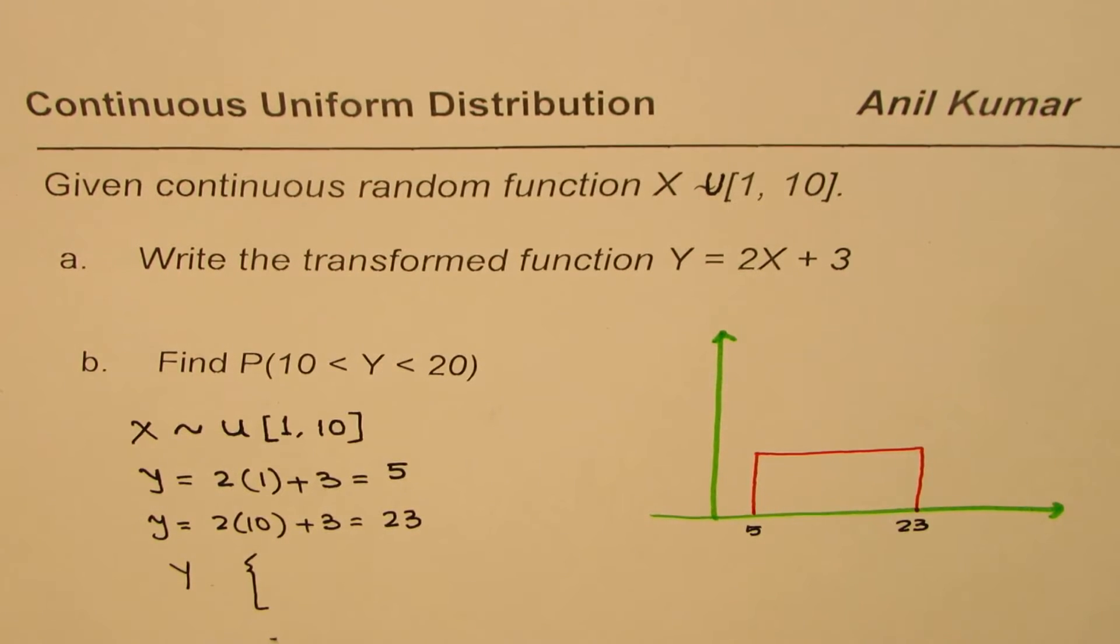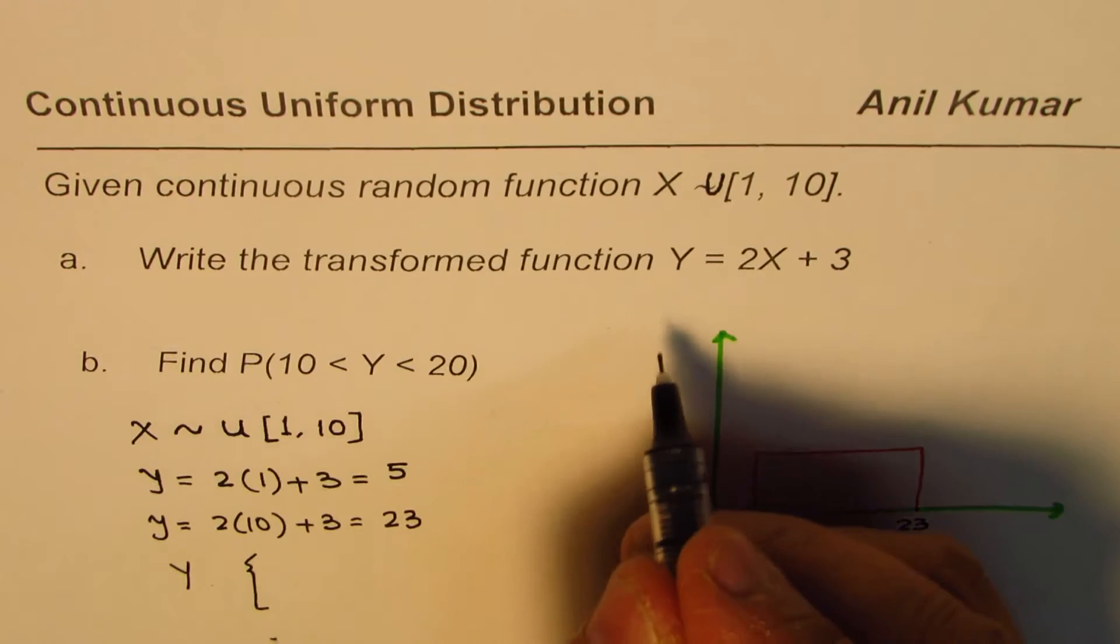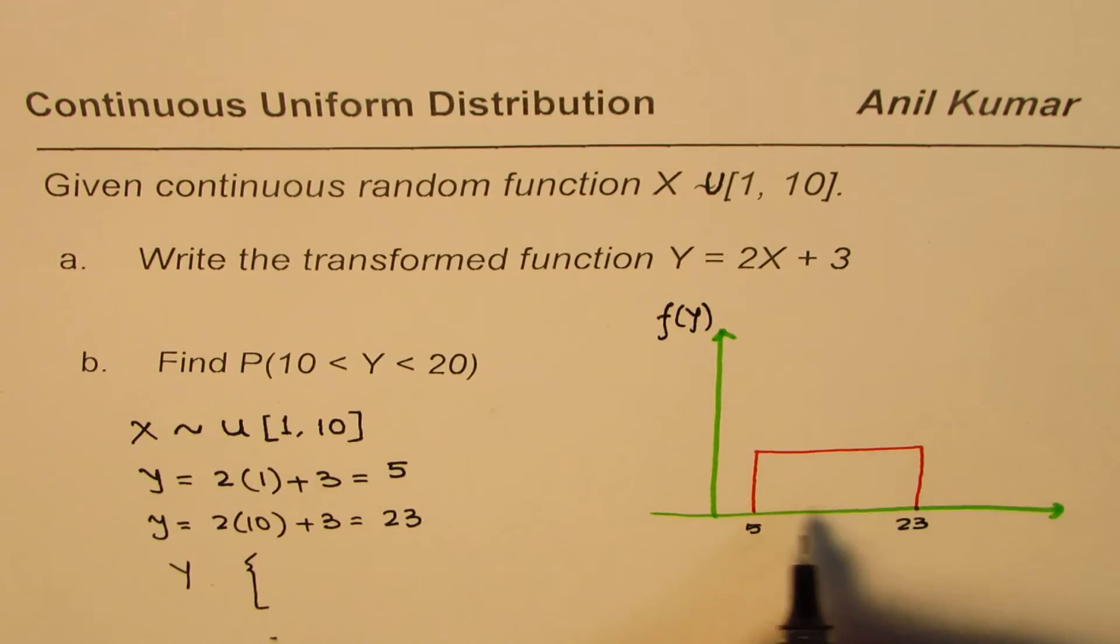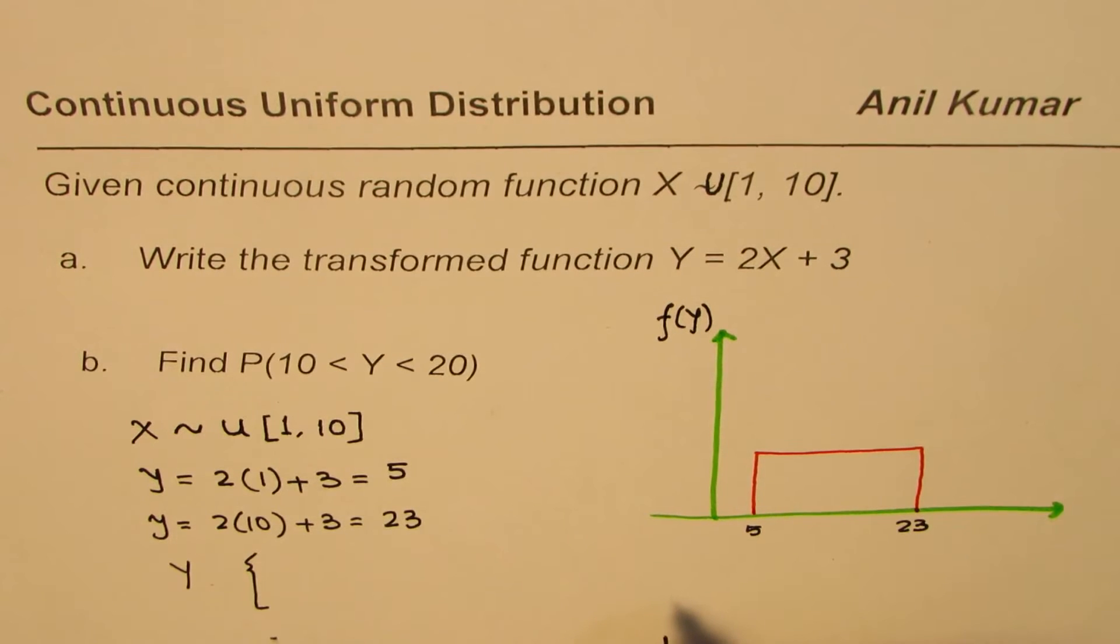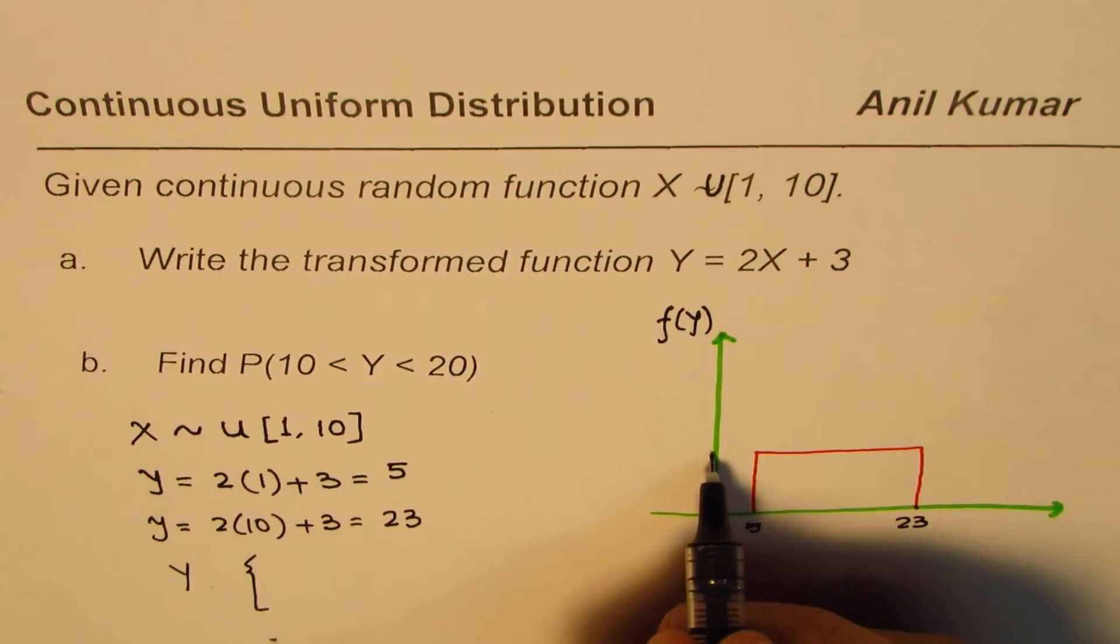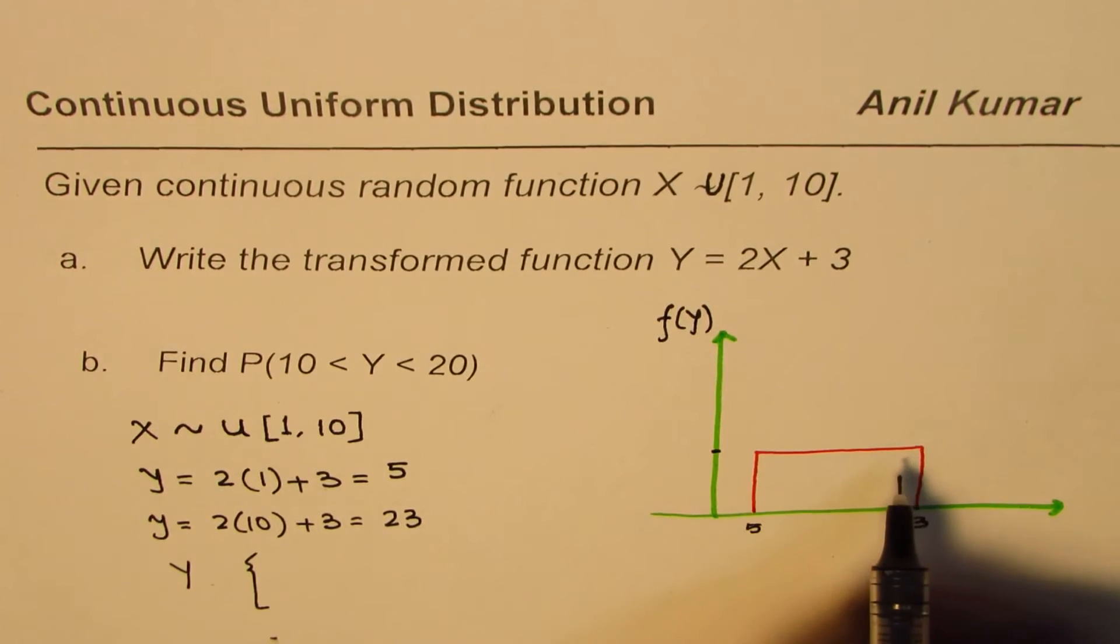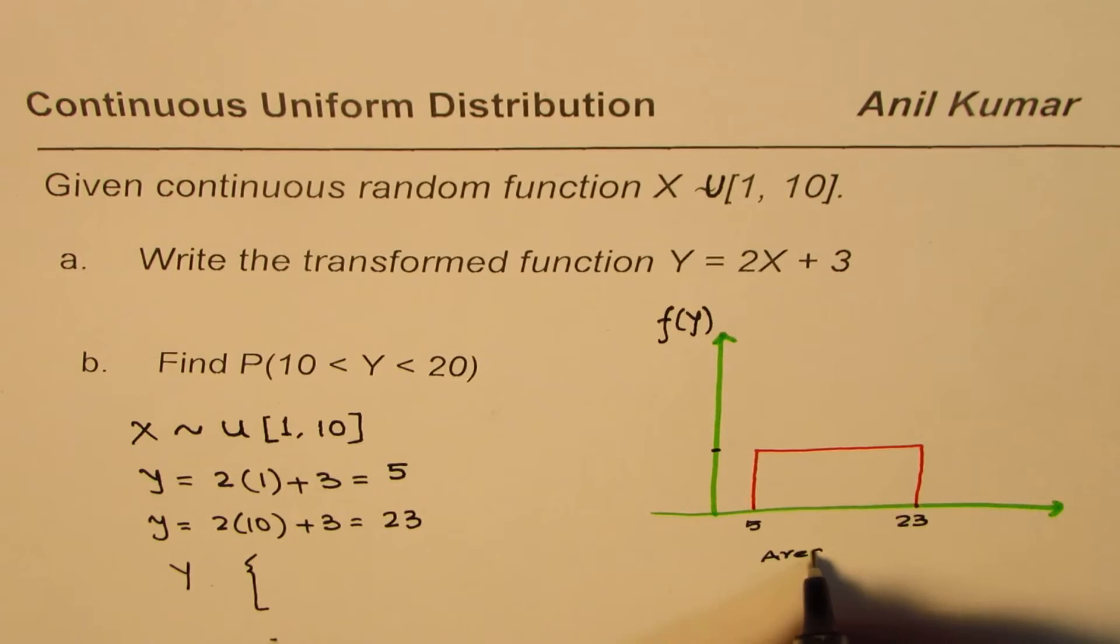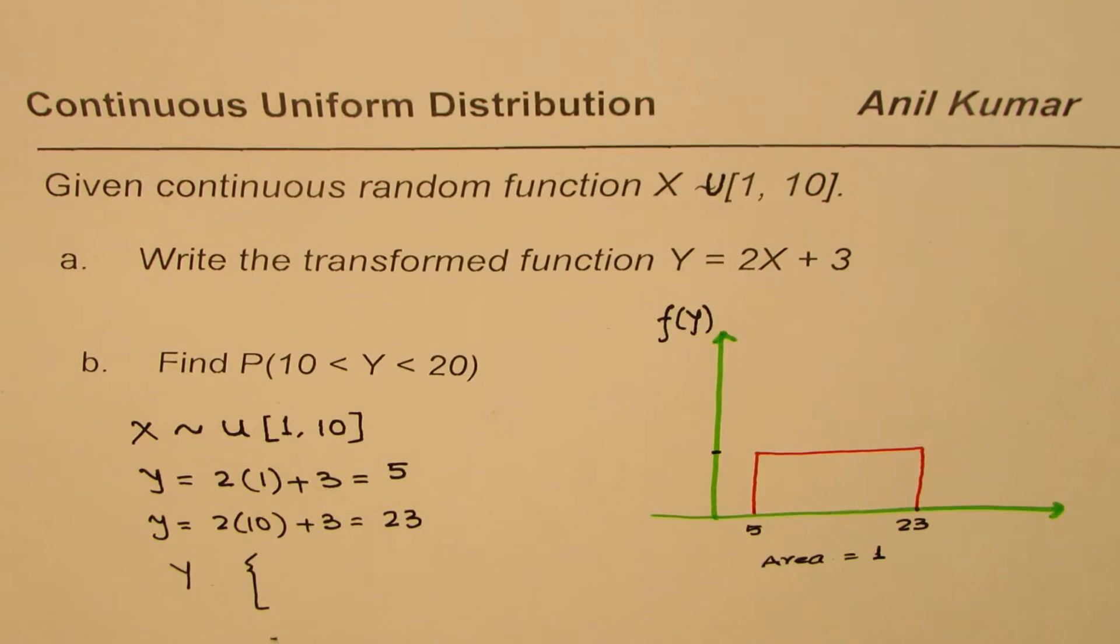And within this interval, the value of the function, let me write this as f(y), is constant, as given here. Now what should be the constant value? That we can find because we know that area is 1. So the area equals 1. So that gives us the constant.